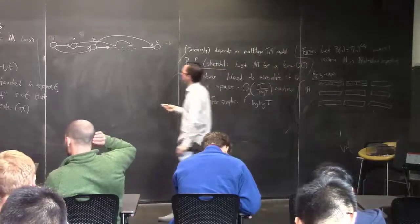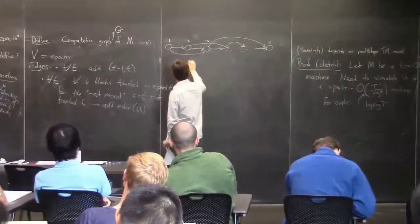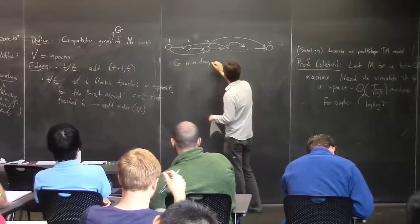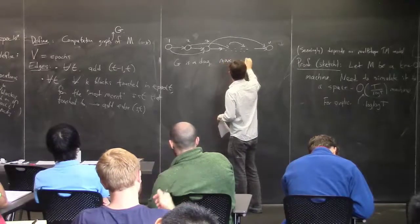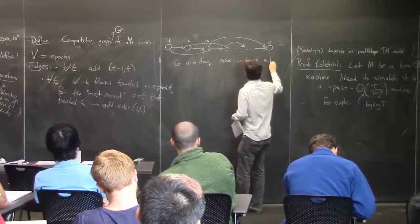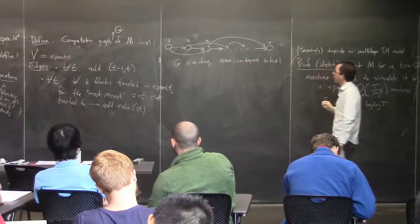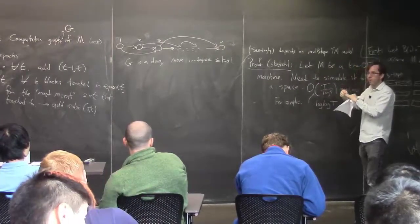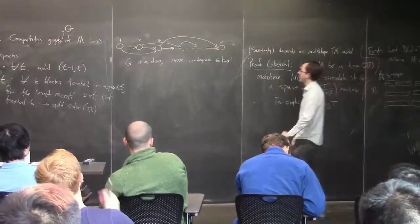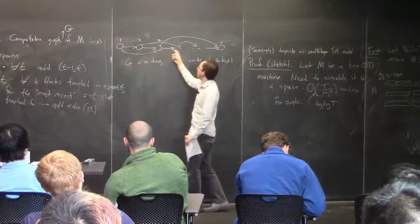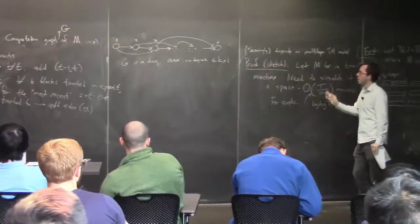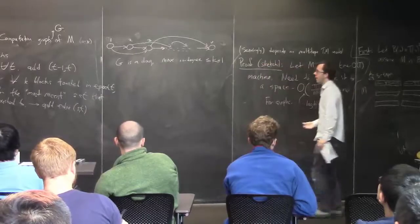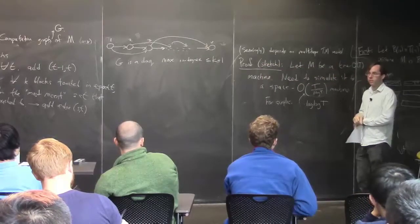Let's observe a couple things about G. This graph G is a DAG — a directed acyclic graph, clearly. It has V vertices. And importantly, it has bounded max in-degree: k + 1. Because for every epoch, there are only k blocks being worked on — k is the number of tapes — so you only look back for k different blocks, plus 1 for the sequential edge. So G is a graph with constant maximum in-degree, which means it has O(V) edges — it's a sparse graph.